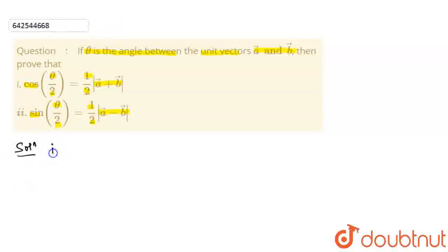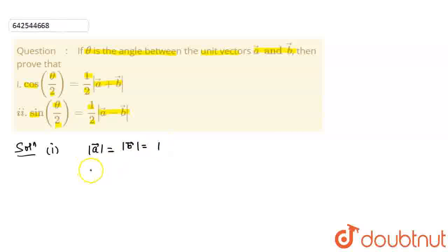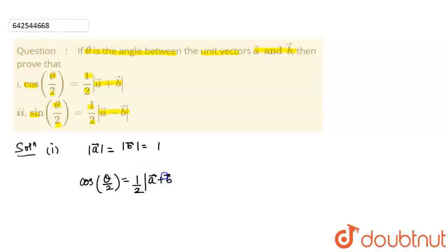Now the solution of this question. For the first part, what is given in the question? That a and b are unit vectors. So the magnitude of a is equal to the magnitude of b, and as they are unit vectors, the magnitude is equal to 1. Now we have to prove that cos(θ/2) is equal to half the magnitude of (a + b).